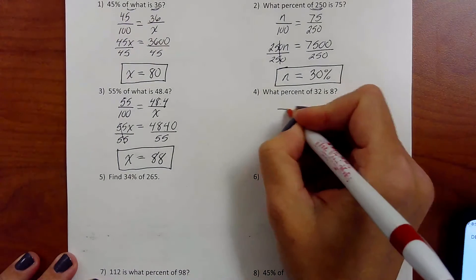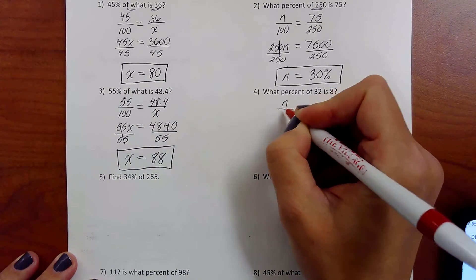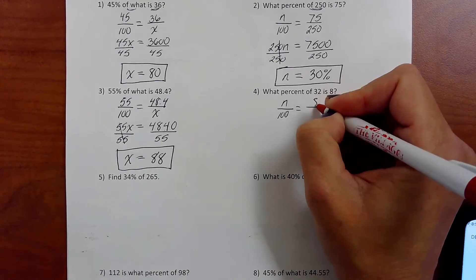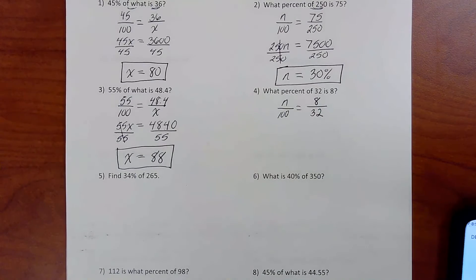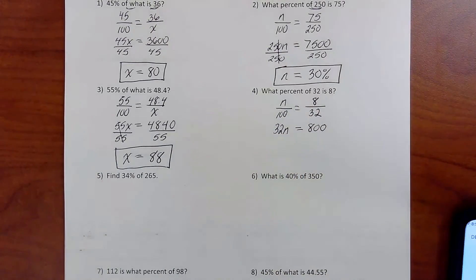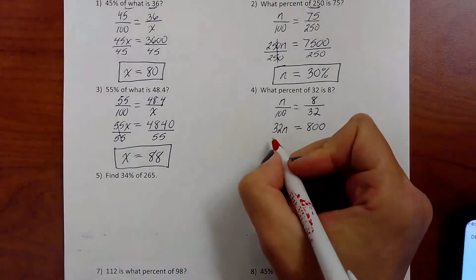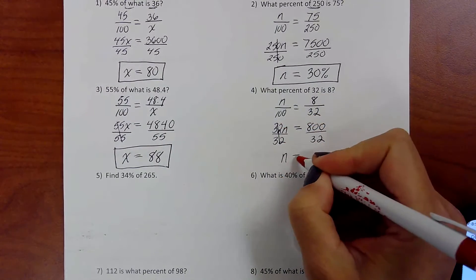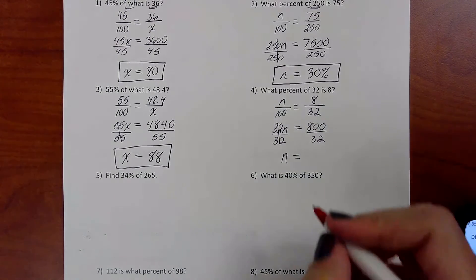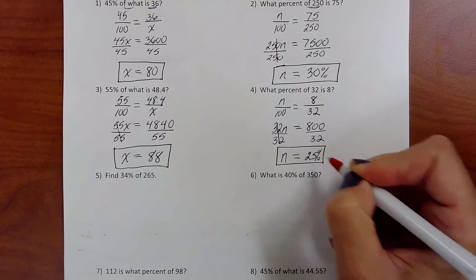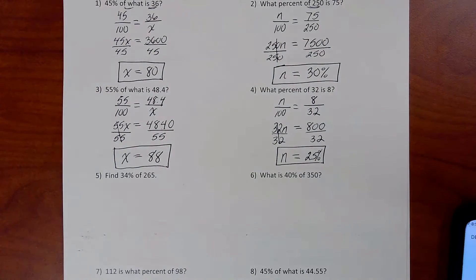All right. Number four. What percent of 32 is 8. So what percent? We don't know. Of 32 is 8. Try to put them down before I do. So you got your 8. You got your 32. 32 times n is 32n. 8 times 100 is 800. Get n by itself. Divide by 32. 800 divided by 32 is 25. Notice I write it down first and then. Uh-oh.